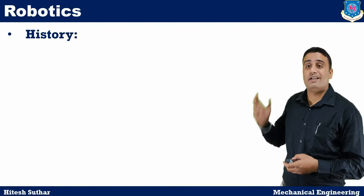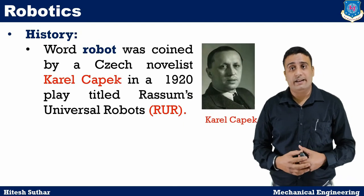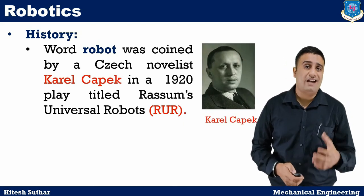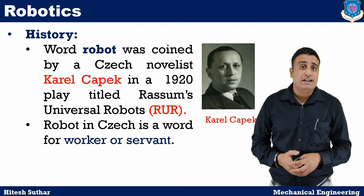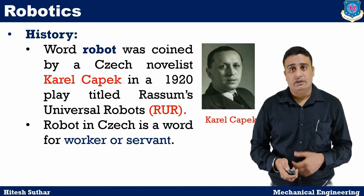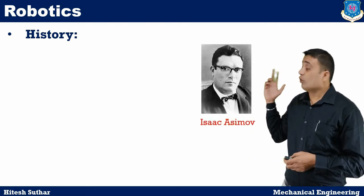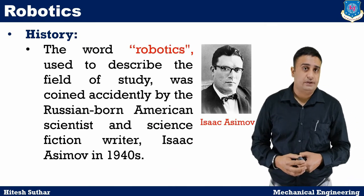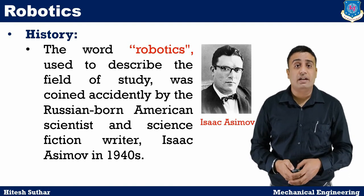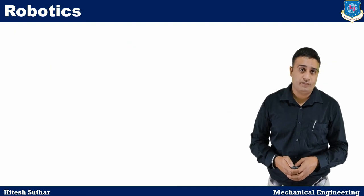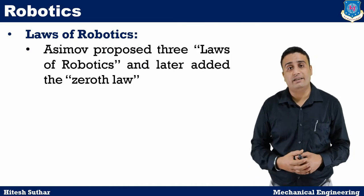Now let's discuss some history of robots. The word robot was coined by the Czech novelist Karel Čapek in 1920, in a play titled Rossum's Universal Robots. A robot in Czech is a word for worker or servant. The word robotics, used to describe the field of study, was coined accidentally by the Russian-born American scientist and science fiction writer Isaac Asimov in the 1940s.